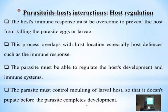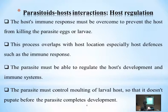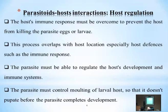After host suitability comes host regulation — meaning the control process. Host immune response must be overcome to prevent the host from killing the parasite eggs or larvae. After placing the progeny inside the host, the host's immune system will respond, and the parasitoid must have the ability to defend itself, since the insect's body may treat the new progeny as a foreign invader and attempt to eliminate it.